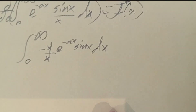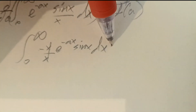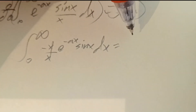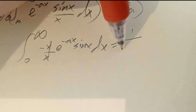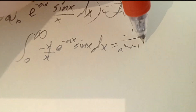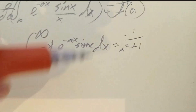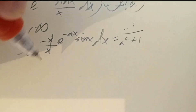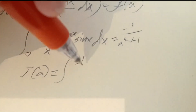This is a standard integration by parts question. The result is that J'(a) equals negative 1 over (a squared plus 1). This is only J'(a), so once again J(a) is equal to the integral of negative 1 over (a squared plus 1), da.